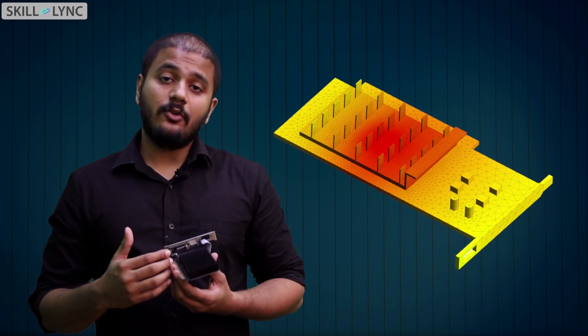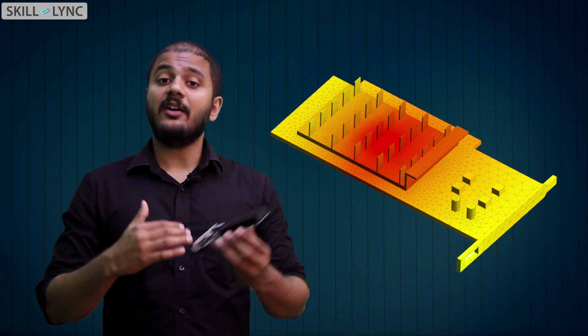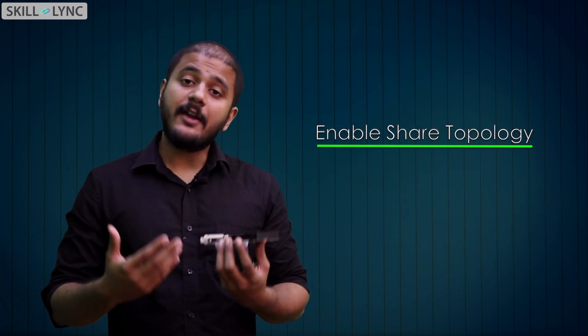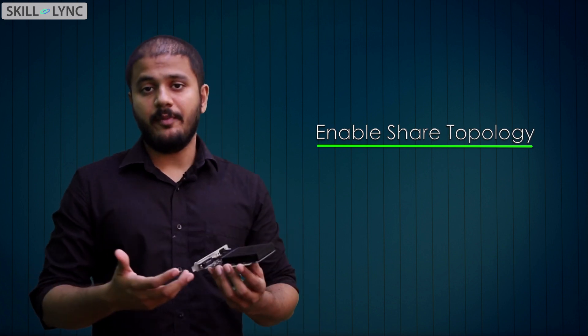Inside this enclosure, air is going to flow over the graphics card and help it cool down. Once we have created the model in Space Claim, we enable share topology that will help us identify different volumetric zones in ANSYS Fluent.